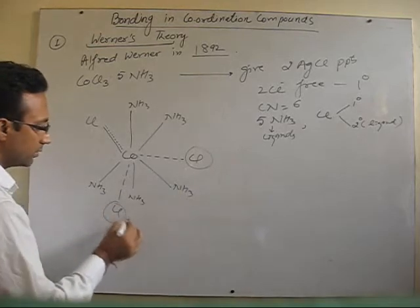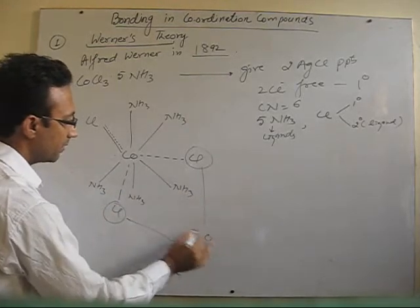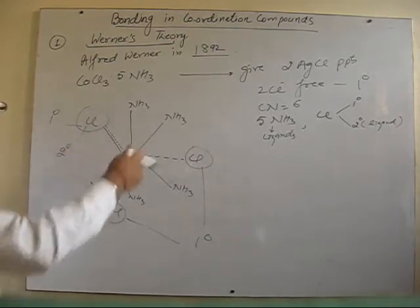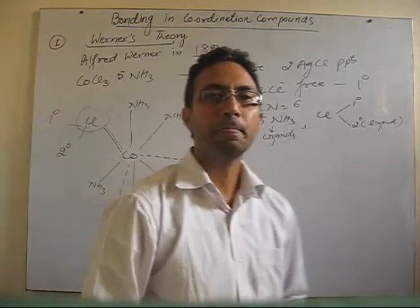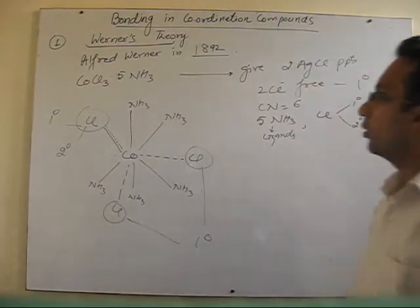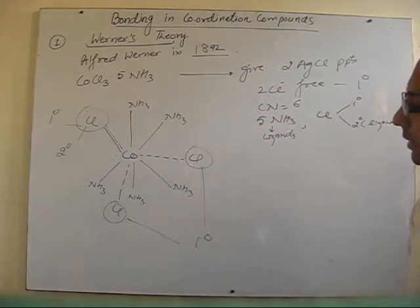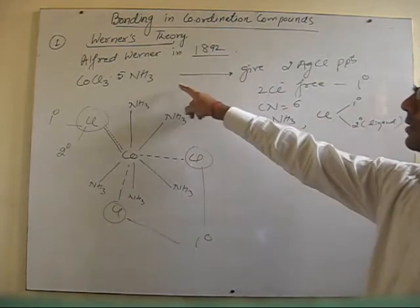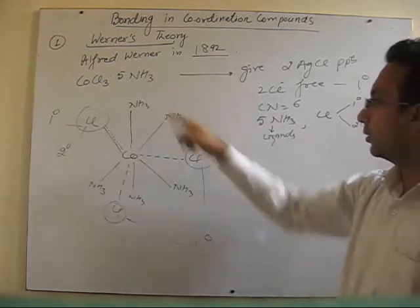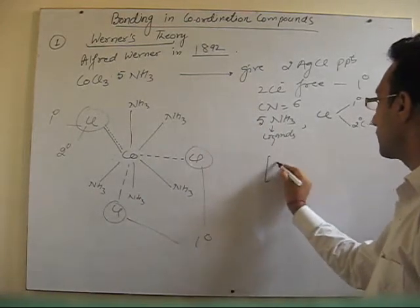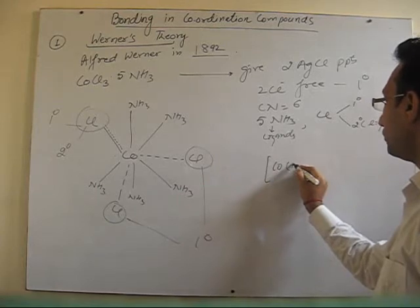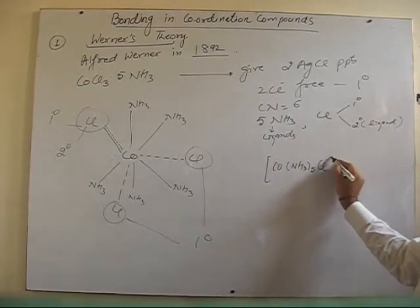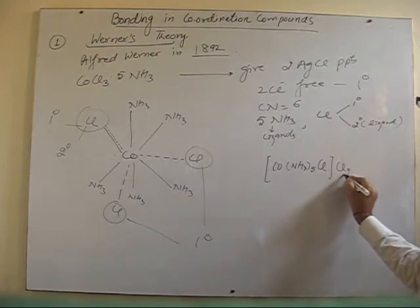These 2 Cl satisfy only primary valencies, while this 1 Cl satisfies both primary and secondary valencies, and all ammonia satisfy secondary valencies. If you represent this complex in today's notation: cobalt with 5 ammonia ligands, 1 Cl as ligand, and 2 Cl as counter ions outside the bracket.